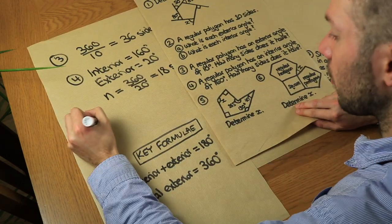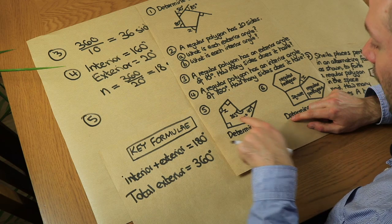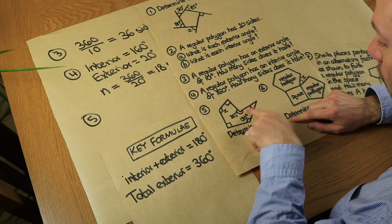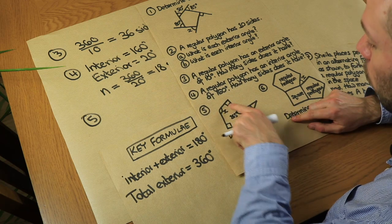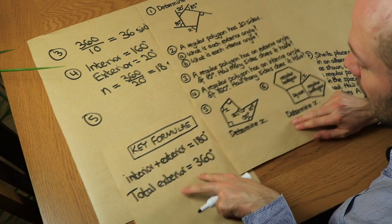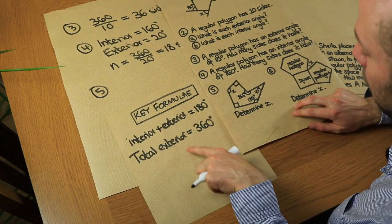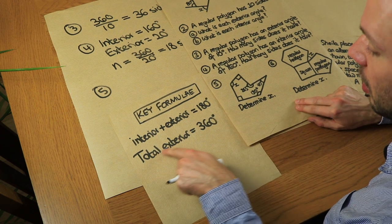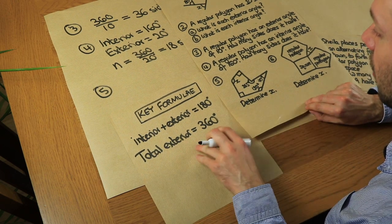Question 5 requires a new formula. We have a hexagon with six sides and we know all interior angles except one. We don't currently have a formula for the total interior angle — we know the formula for the total exterior angle but not the total interior. So we need to derive one.